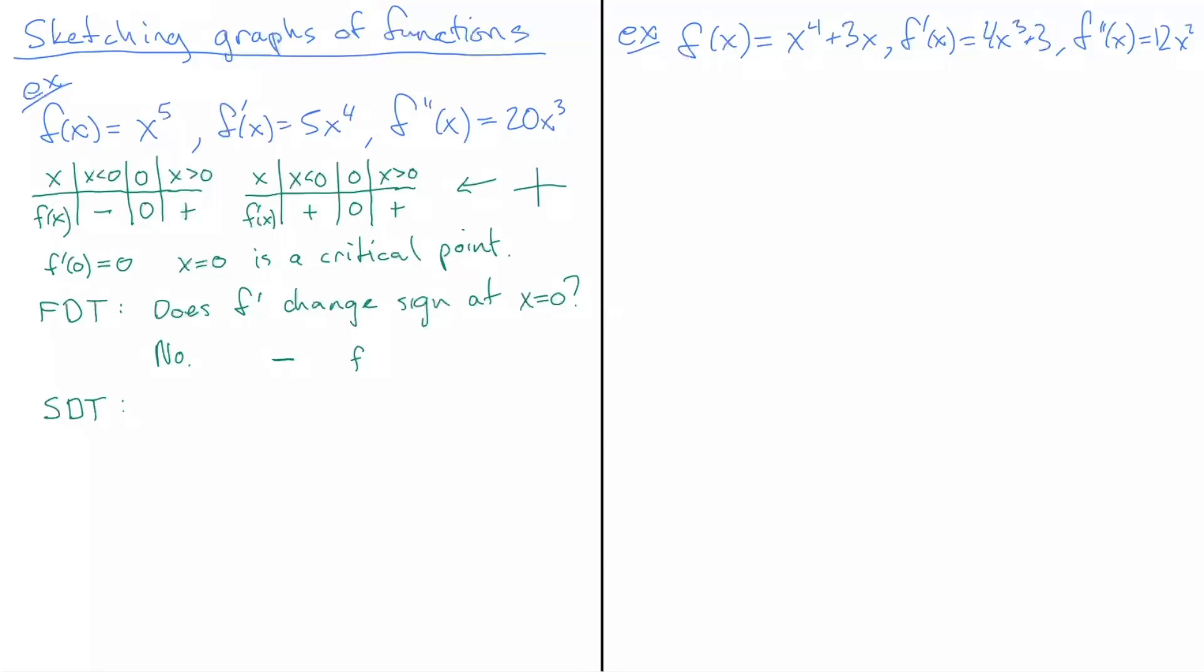and you're only willing to evaluate at integers, you might miss some zeros and get the wrong sign. If you're confident you caught all the zeros, that shouldn't be much of a risk. But the point is the first derivative test is not the only method.